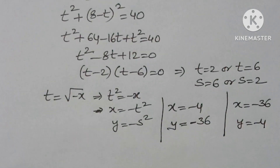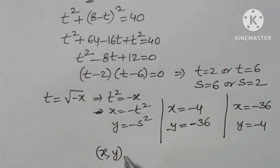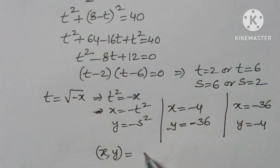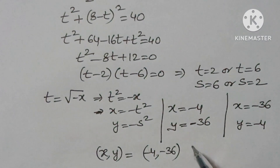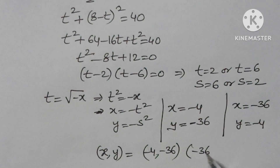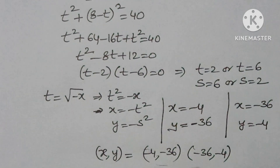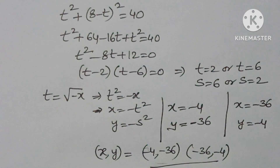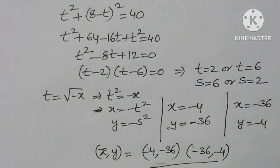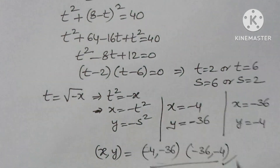I hope you understood the video. The solutions are (x, y) = (−4, −36) and (x, y) = (−36, −4). Thank you for watching NCG Max. If you liked the video, please subscribe to the channel and share it with your friends.